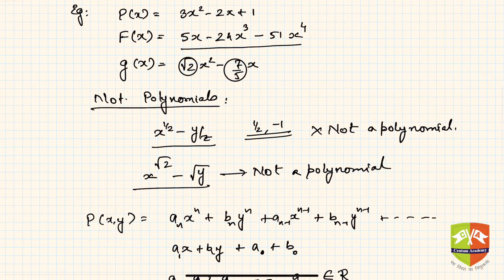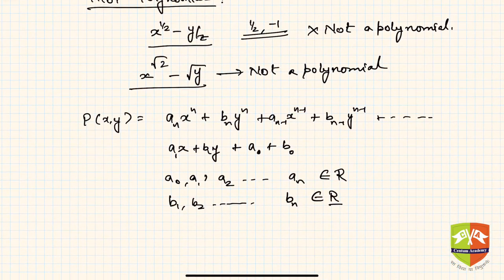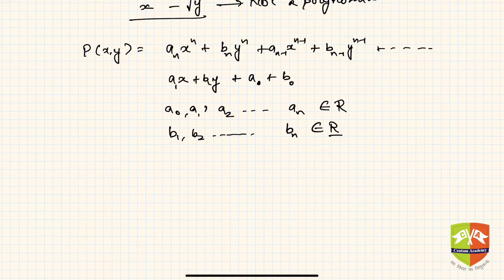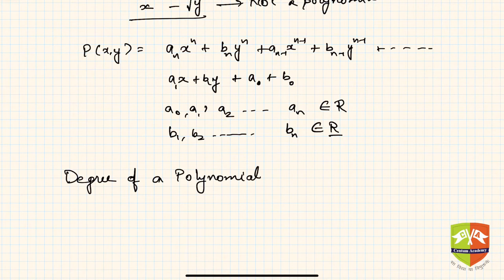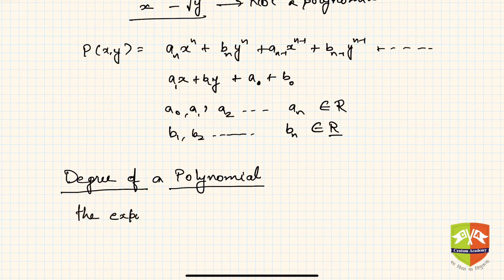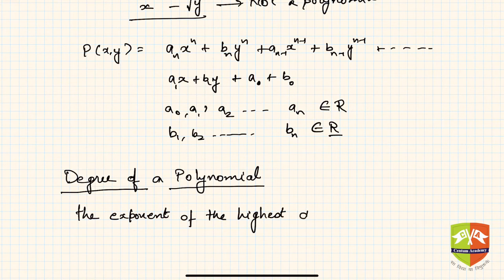In this course, however, we will restrict ourselves to polynomials in only one variable. Next comes an important concept: the degree of a polynomial. The degree of a polynomial is defined as the exponent of the highest degree term in the polynomial. This concept will be used a lot when dealing with factorization of polynomials and finding zeros of a polynomial.